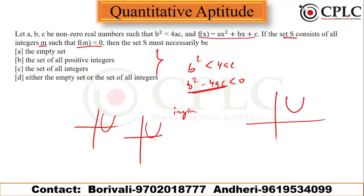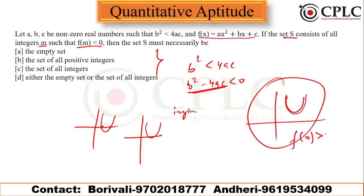When roots are real and equal, the graph touches the x-axis at only one point. When roots are imaginary, the graph does not touch the x-axis at all. In such a case, the value of the function is always greater than zero — it can never be less than zero.